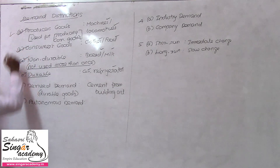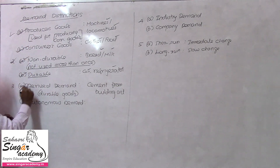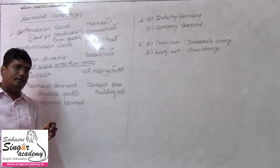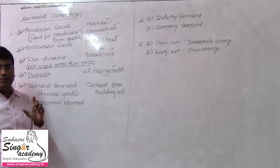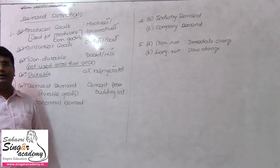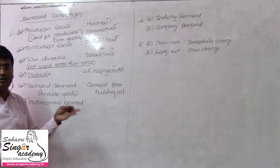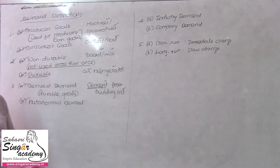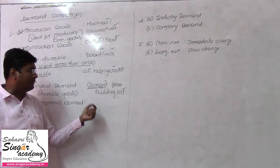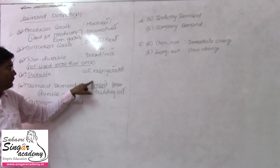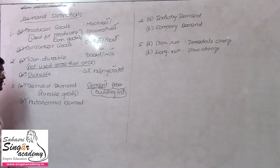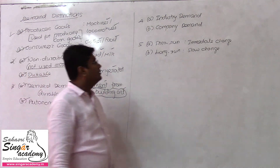Third block: Derived Demand and Autonomous Demand. Derived Demand means the demand for a good depends on another good. For example, petrol demand is derived from car sales — when car sales peak, petrol demand rises. Similarly, cement demand is derived from building activity — when construction increases, cement demand increases. Autonomous Demand is where an industry's demand is independent, not based on another good.